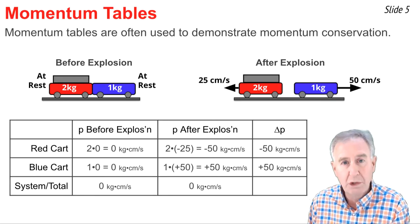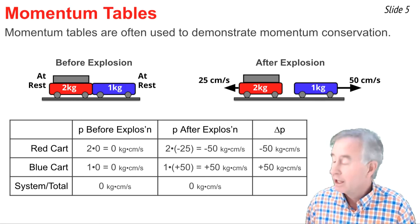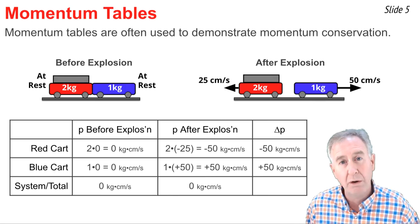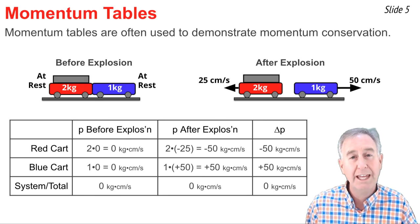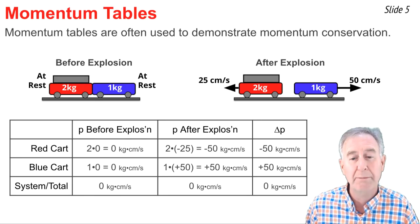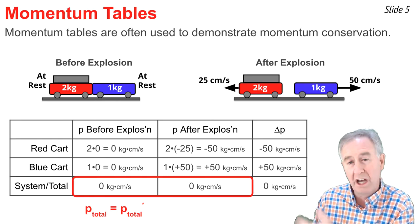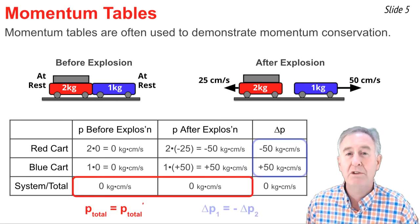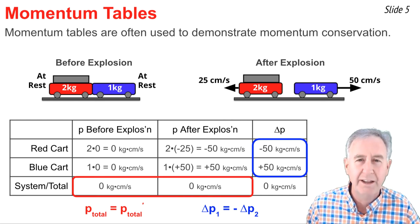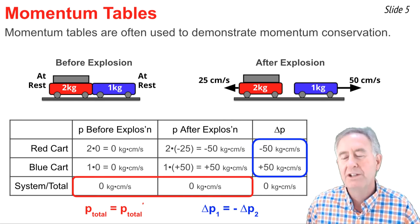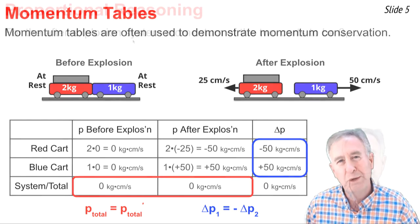This table shows the two big principles of momentum conservation. The first is in the bottom row: the total momentum before the explosion equals the total momentum after the explosion. The second principle is in the last column: the change in momentum of object one (the red cart) is equal and opposite to the change in momentum of object two (the blue cart).